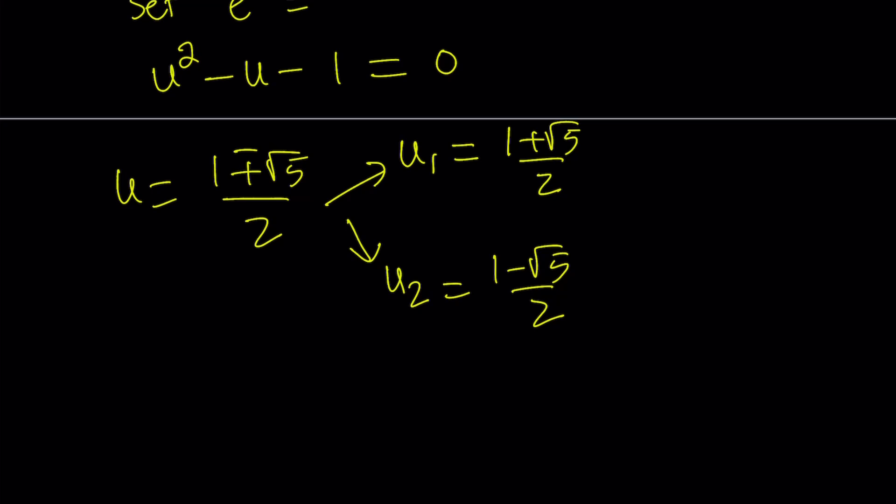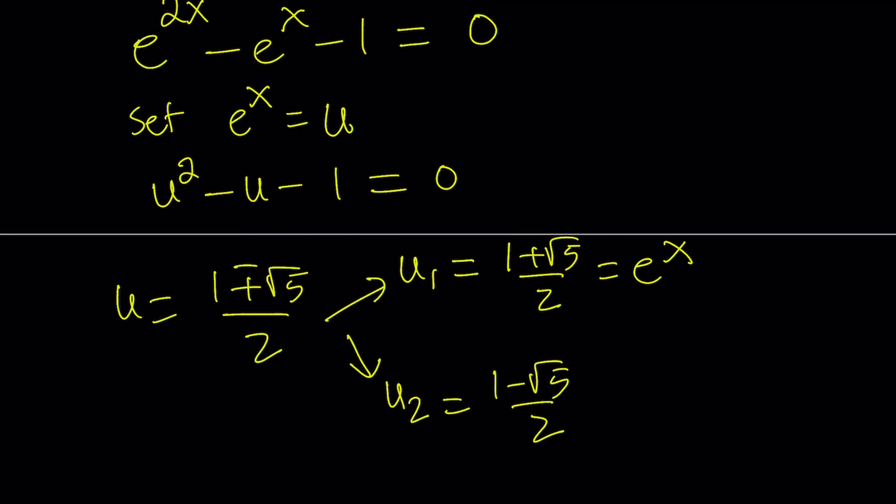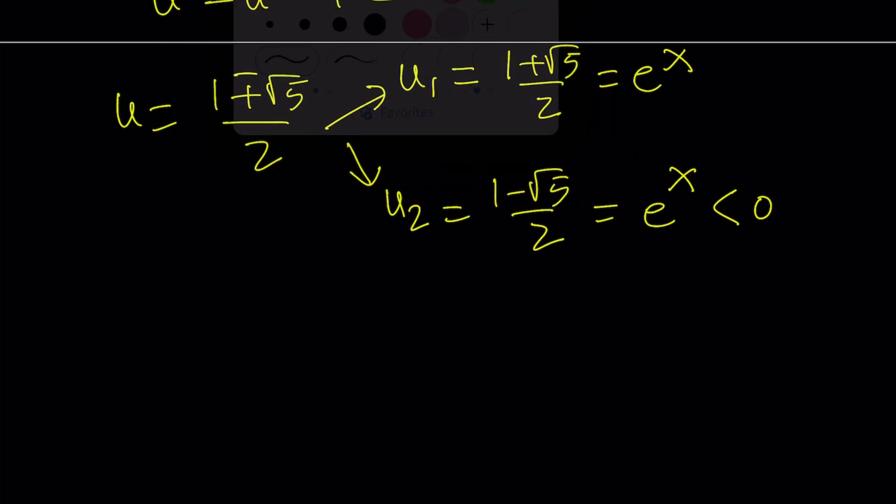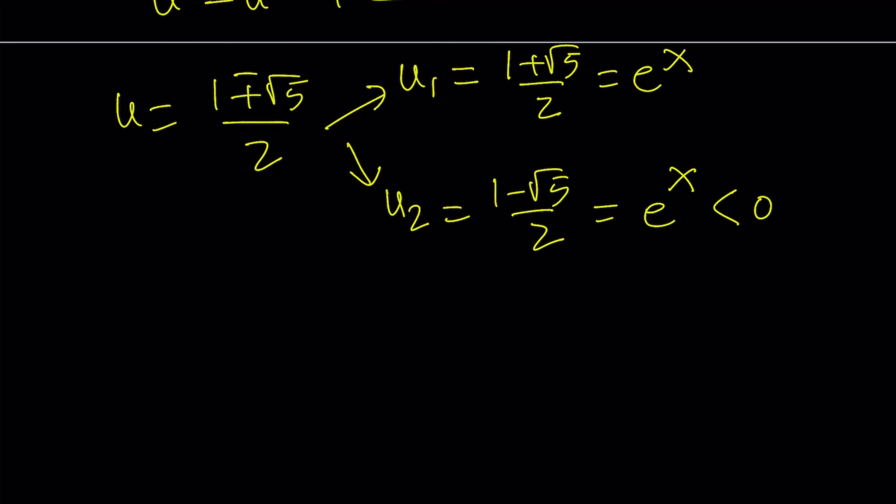Now notice that we're going to set both of these equal to e^x because by definition e^x is equal to u. Therefore, we're just going to set u values equal to e^x. But there's a problem with the second one because (1 - √5)/2, obviously √5 is greater than 1, so this is less than 0. But e^x can never be 0, and it can't be negative either. So it's always positive. So we're not going to get a valid solution from here. The only solution we end up with is going to come from here. I'm not saying that is the solution, it's just a u value. We have to find the x value.